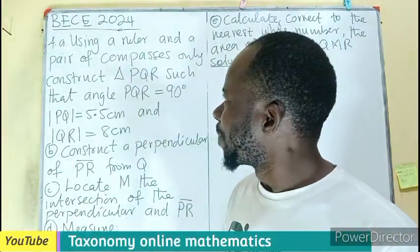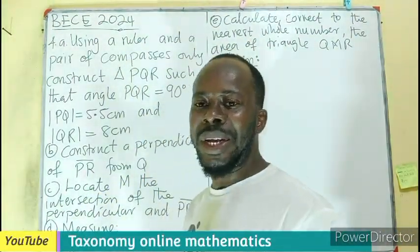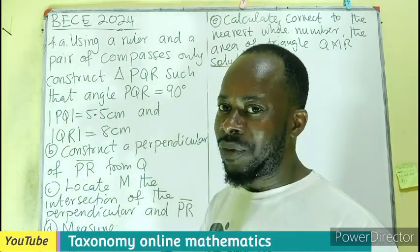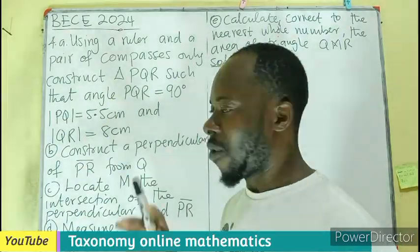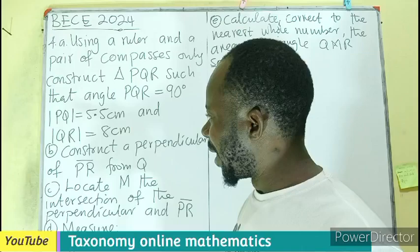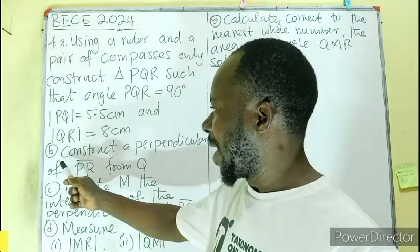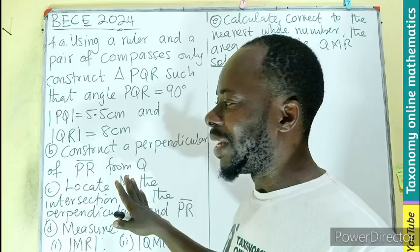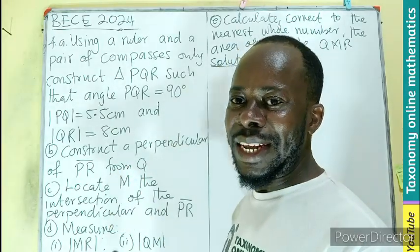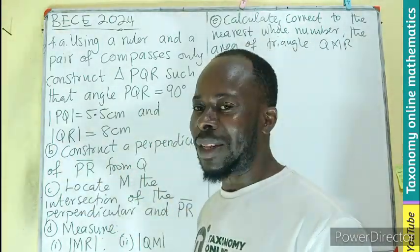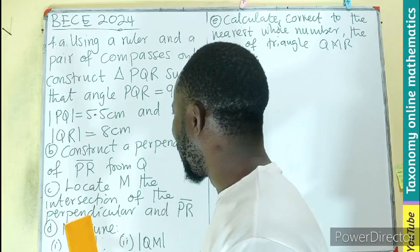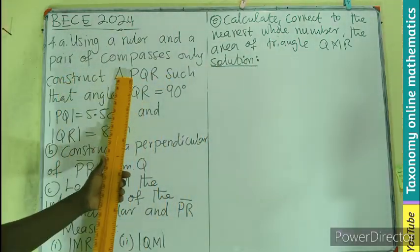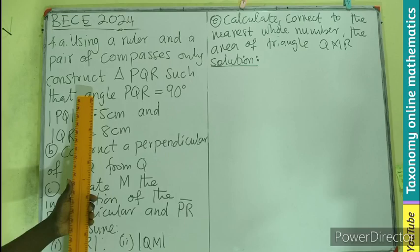Hello, welcome. Let's have a correction on this BC 2024, question number four — specifically the B part. I have a construction on this and there is a correction to be done on the B part, so let's see how we can get that correction. From here, we are constructing triangle PQR.